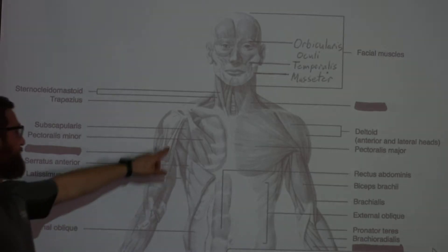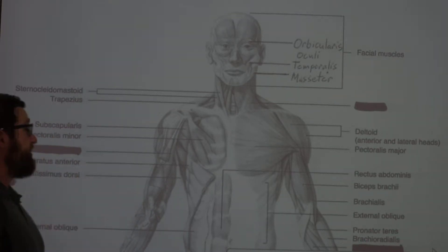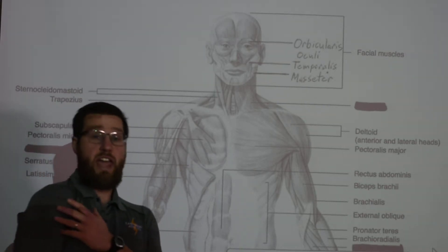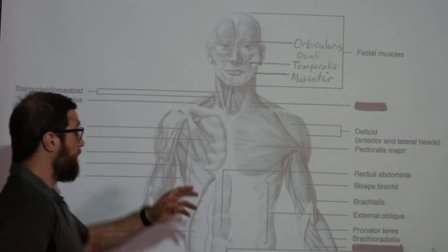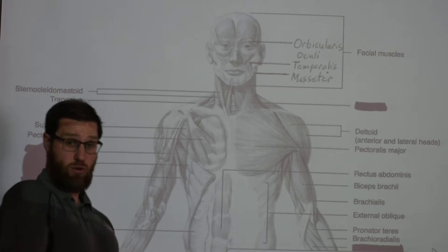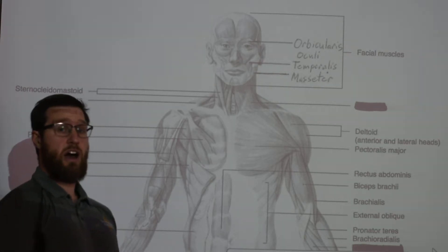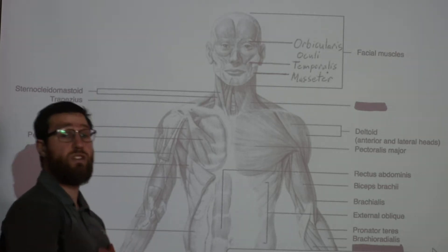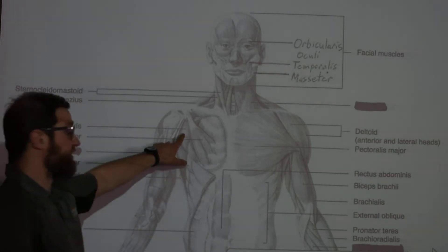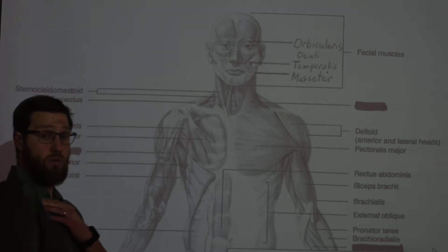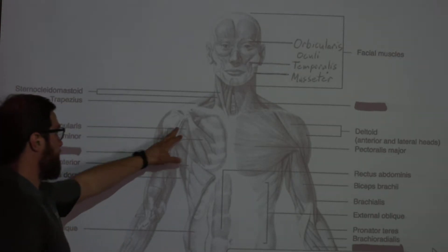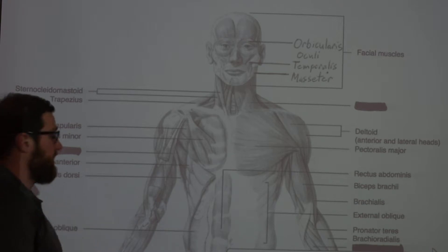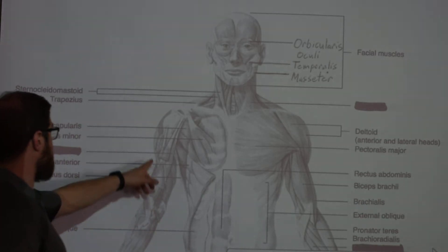Your subscapularis is also involved at the shoulder. It is part of your rotator cuff group, which handles internal and external rotation at the shoulder. The subscapularis is the only rotator cuff muscle involved in internal rotation — or medial rotation. The other three are involved in external rotation and can only be seen on the posterior side. The subscapularis sits within your scapula and articulates to the head of your humerus.